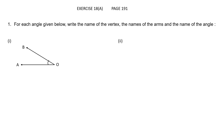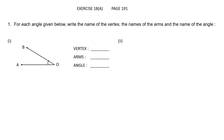Question 1. For each angle given below, write the name of the vertex, the names of the arms, and the name of the angle. The first angle has been given to us. Vertex is the point where the two rays meet. So the name of the vertex is O.